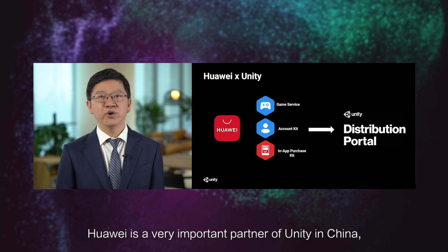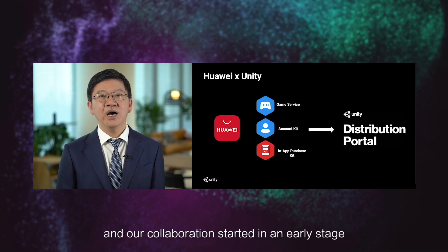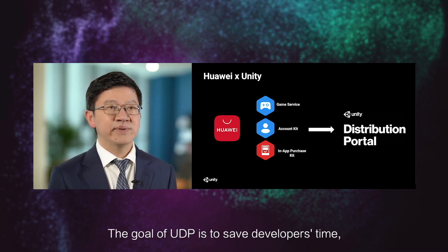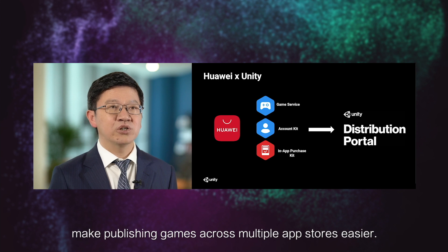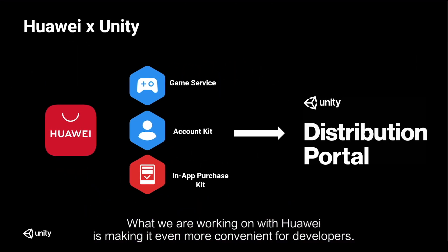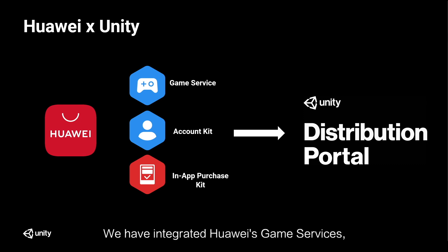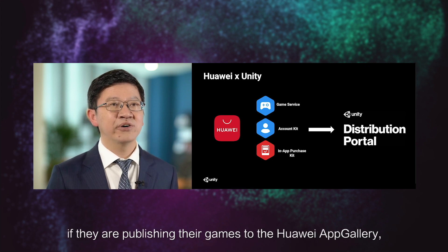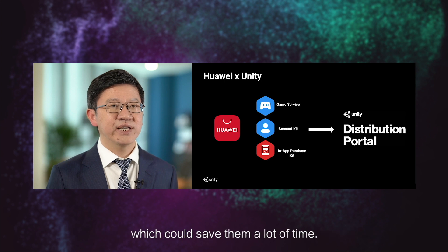Huawei is a very important partner of Unity in China, and our collaboration started at an early stage as we were planning to roll out our UDP product. The goal of UDP is to save developers' time and make publishing games across multiple apps so much easier. What we are working on with Huawei is to make it even more convenient for developers. We have integrated Huawei game services, account, and IAP kits into our UDP, meaning that UDP developers do not have to integrate these SDKs again if they are publishing their games to the Huawei App Gallery, which could save them a lot of time.